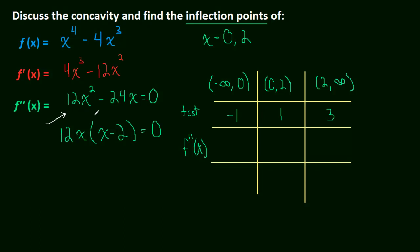Here is the second derivative — we can use either form, whatever is easier. Plugging in negative one: negative one squared is positive one, times 12 is positive, minus 24 times negative one is also positive, so the result is positive. Plugging in one gives a negative number. Plugging in three — that's a positive times one — gives 36, a positive number.